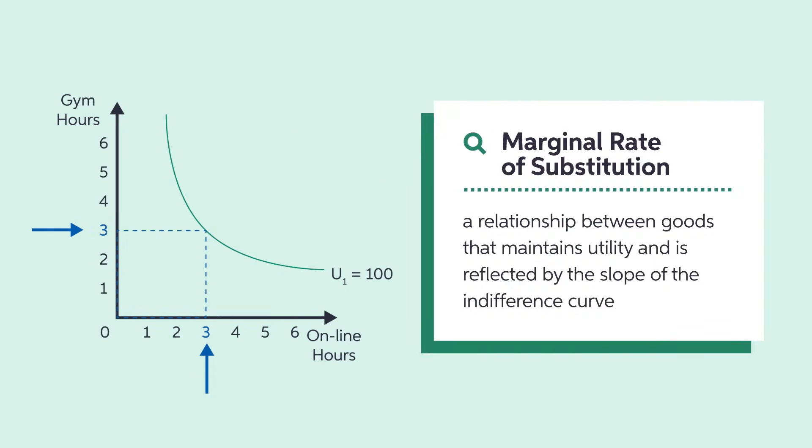However, if he sacrificed 1 hour of gym time, he must be compensated by 2 hours of additional online time just to maintain that same level of utility. This slope value of minus 2 represents the marginal rate of substitution that maintains Garrett's utility level.